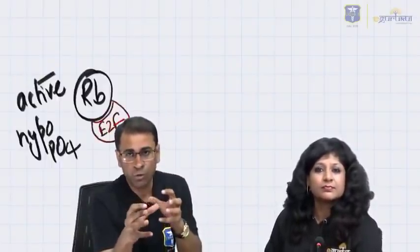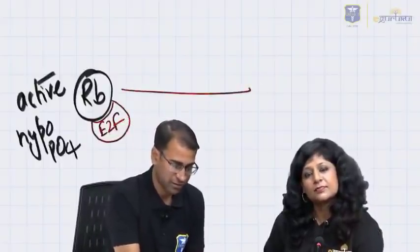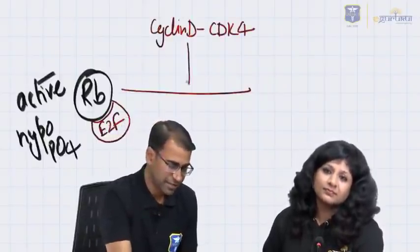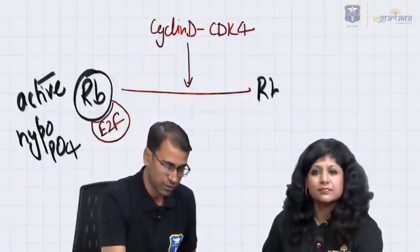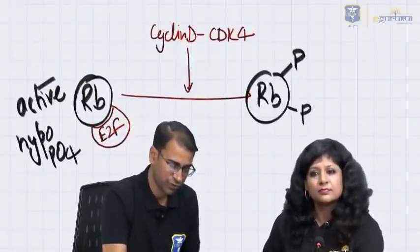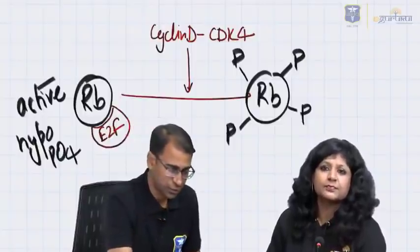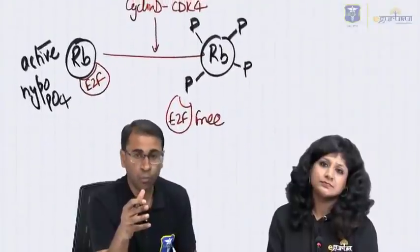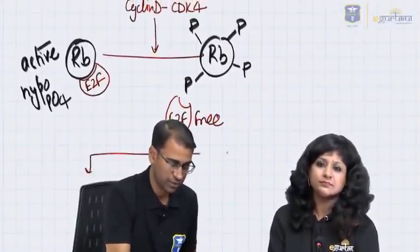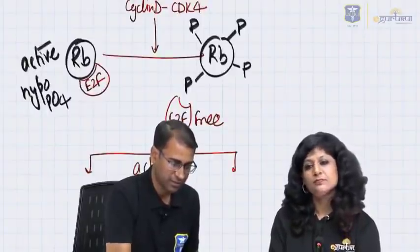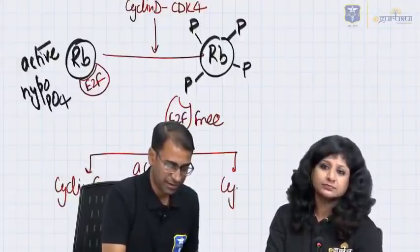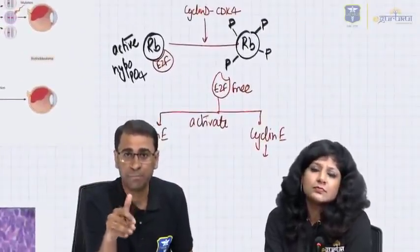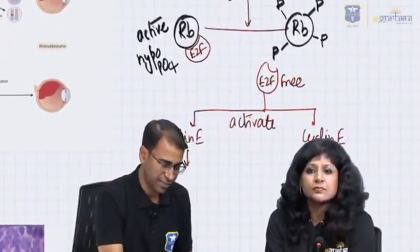Whenever there is activation by growth factors — for example, activation of cyclin D and CDK4, which are cell cycle proliferators — this causes the RB gene to lose E2F. The RB gene adds many phosphate groups to itself, and because of this addition of phosphate groups, E2F elongation factor 2 becomes free. This free E2F is the basic reason for cell proliferation, activating other cyclins like cyclin E and cyclin A — which are cell cycle proliferators. Cyclin E proliferates the G1/S phase.